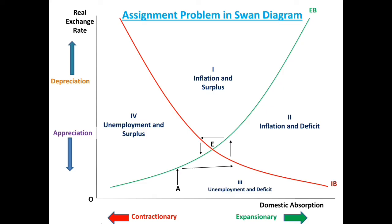If the assignment is wrong, the movement will be divergent and the economy will move away from point E. This is the assignment problem in the SWAN model. The assignment problem is solved by assigning fiscal policy for the attainment of internal balance and exchange rate policy for the attainment of external balance. However, these views were later challenged when the Mundell-Fleming model was introduced, which will be the theme of our next presentation.